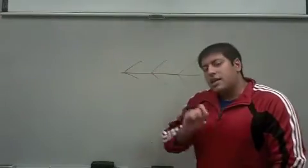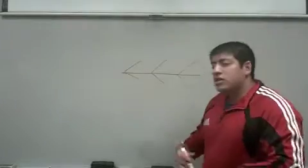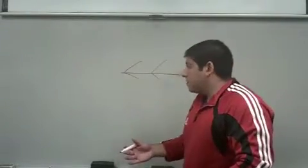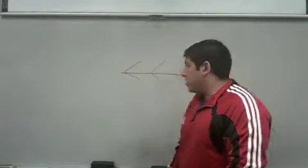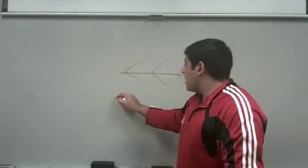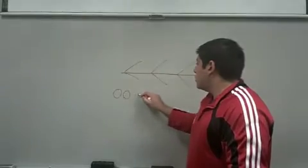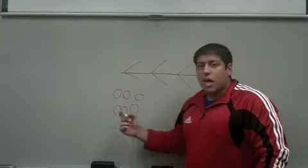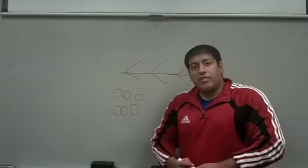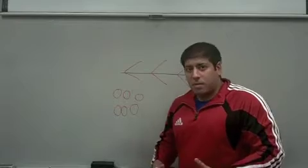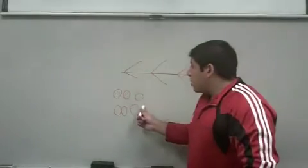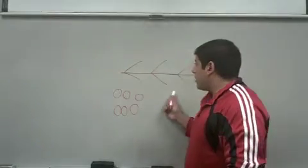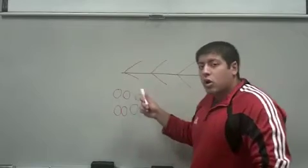If you have this established, what you want to do is introduce into this system, in a test tube for example, individual globular G-actins that have been activated with ATP, and you're going to see on which end of this filament is growing.